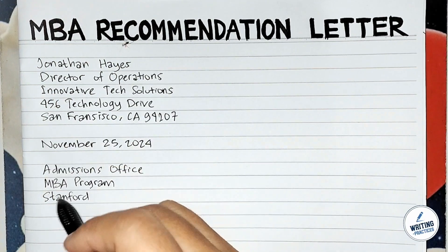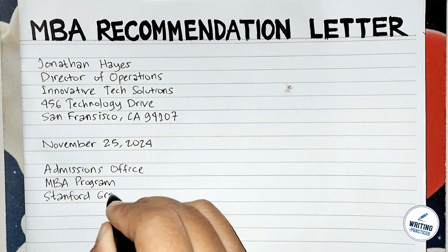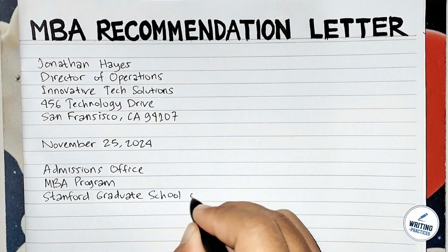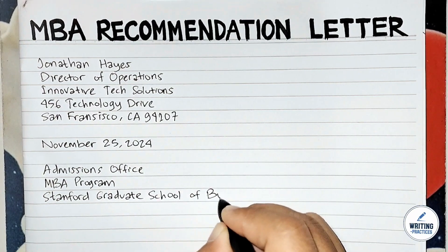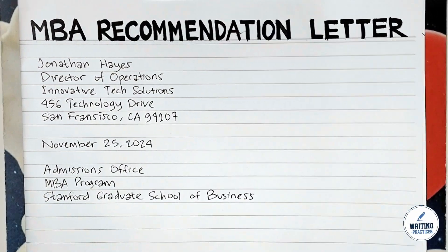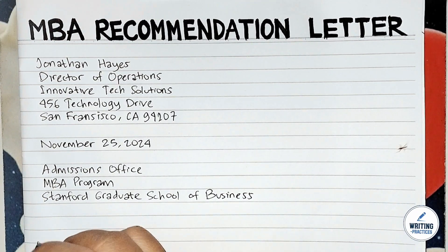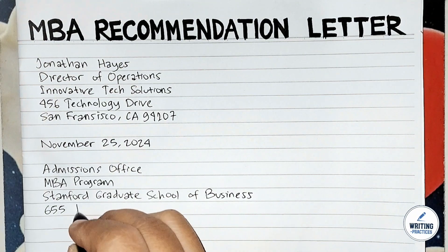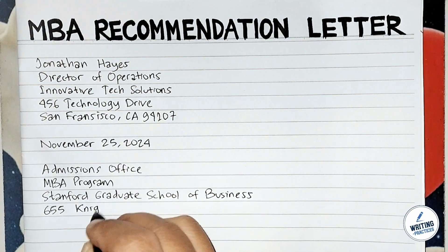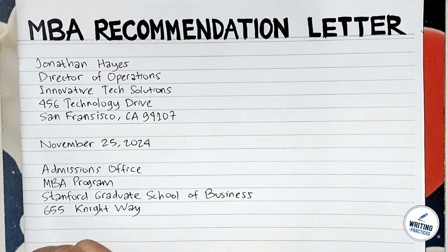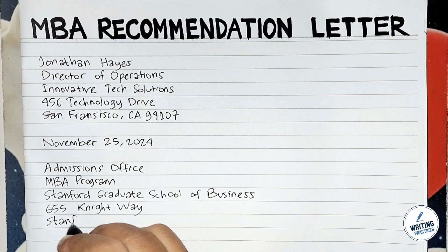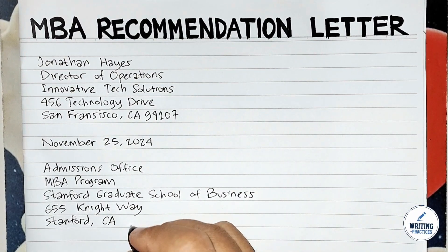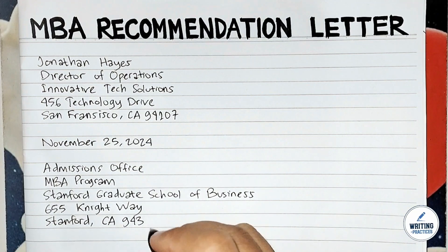After that, write the date of the letter when it is written, to establish the timeline of the recommendation. Next, you can write the recipient's information. Write the name of the office or department receiving the letter — in this case, the Admissions Office. Write also the program name; the name of the program the candidate is applying to is the MBA program.